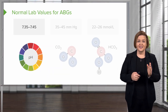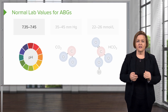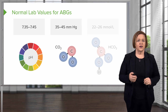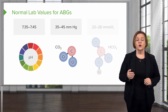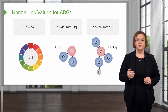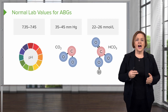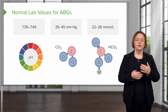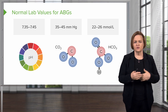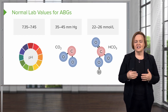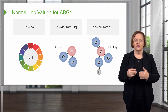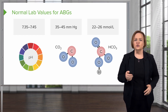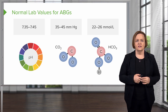Normal values: 7.35 to 7.45 for pH, 35 to 45 for CO2, and 22 to 26 for bicarb. I know you've heard those over and over again — that's because I want you to study as you go with us, and that way you'll know these by the end of the video.